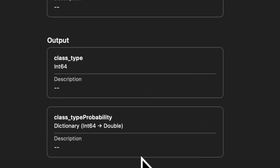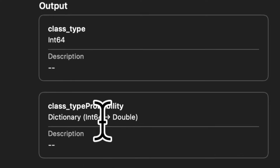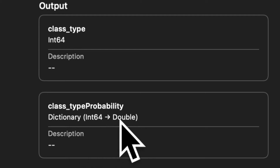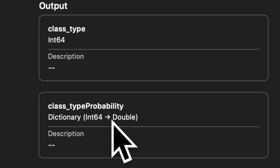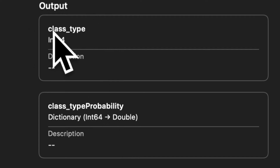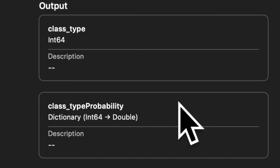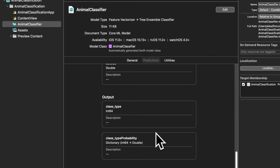We have the class type which is 1 to 7 — mammal, bird, amphibian, etc. We also have class type probability, which is a dictionary where you can pass in any class from 1 to 7 and get the probability that the sample belongs to that class. The class with the highest probability is the top predictor. The machine learning model's task is to assign the correct class label to the sample.